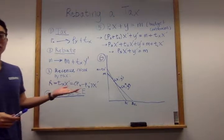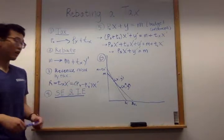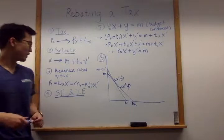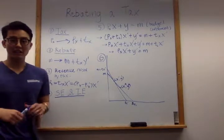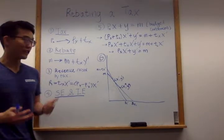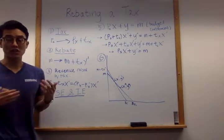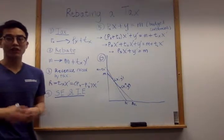Before we move on to the figure in the textbook, I want to talk about the substitution effect and the income effect. Substitution effect basically refers to the change in quantity demanded of good X, which is caused by the change in relative price.